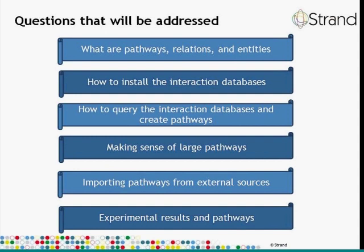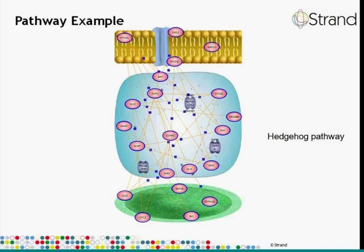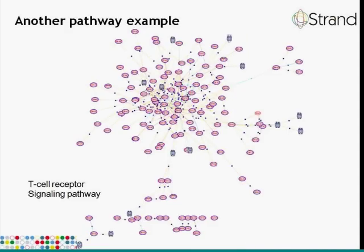Let us take a look at what we mean by pathways, relations, and entities within Avadis NGS. Here is one example of a pathway — the Hedgehog pathway from Cancer Cell Map. You can see that there are several proteins, a few complexes, proteins and complexes assigned to cellular compartments, and interactions connecting the different entities. On the next slide, we have an example of a T cell receptor signaling pathway, which looks more like a network without any cellular compartments. Both pathways were retrieved from the same source; it is just that different layout algorithms have been applied on them.